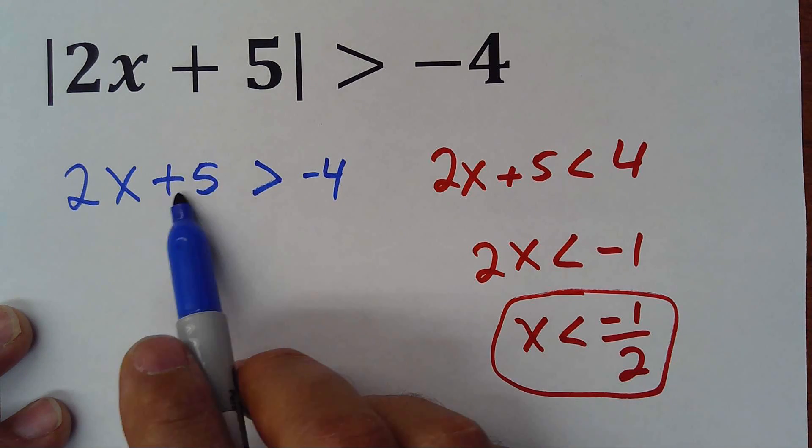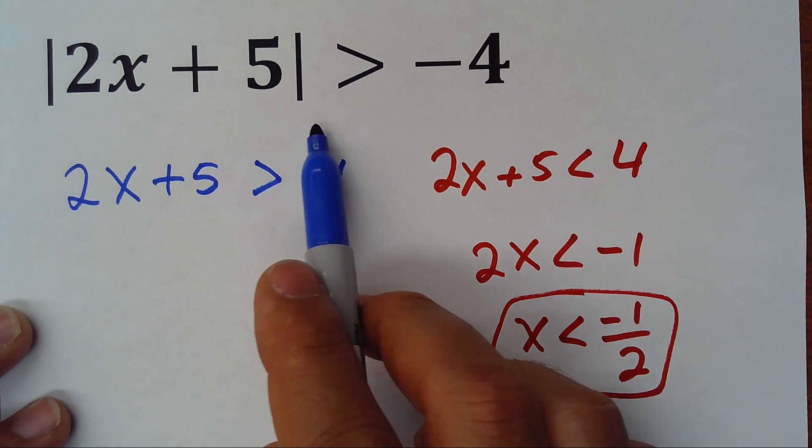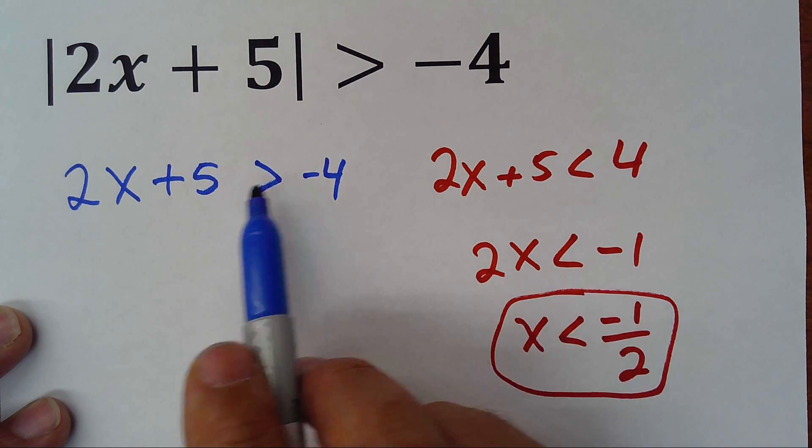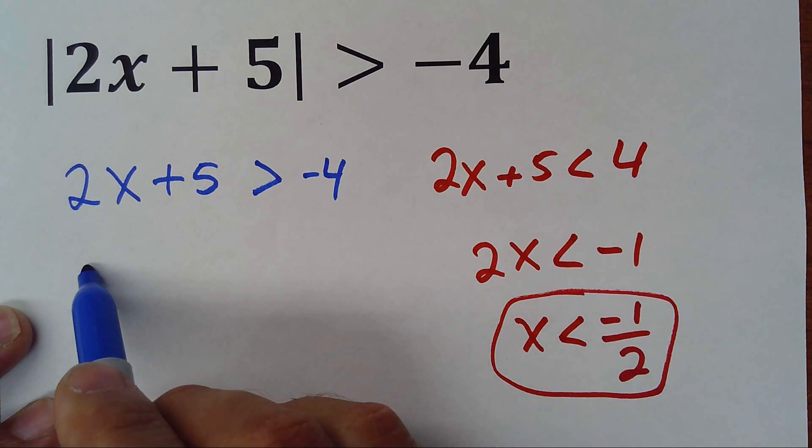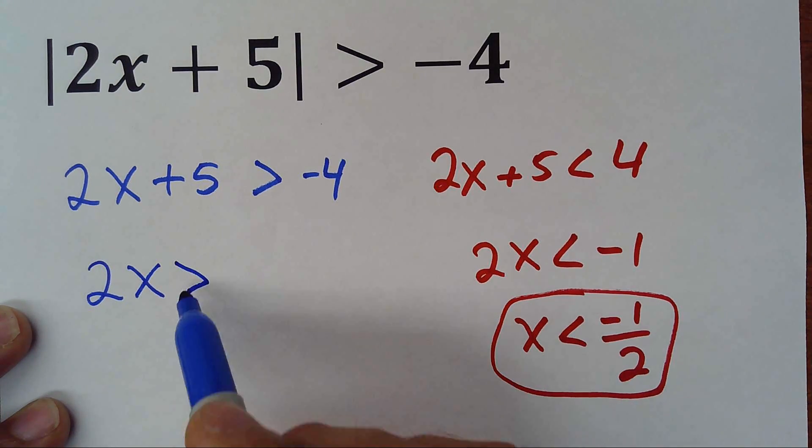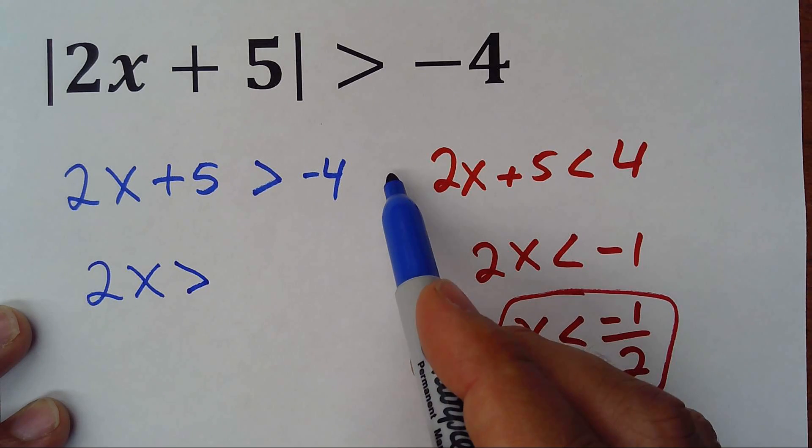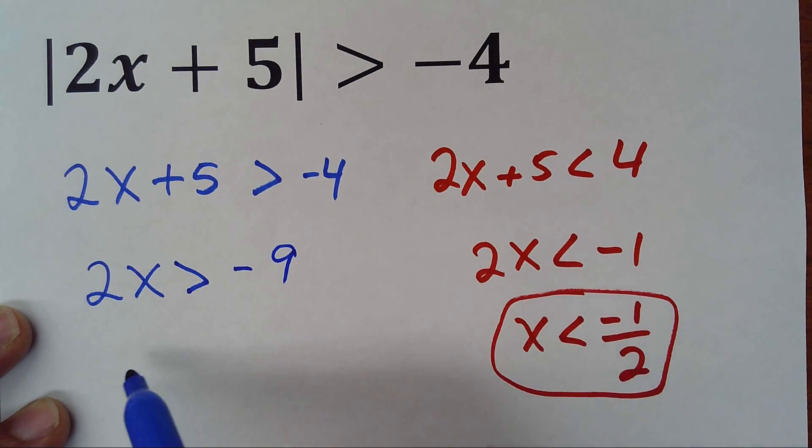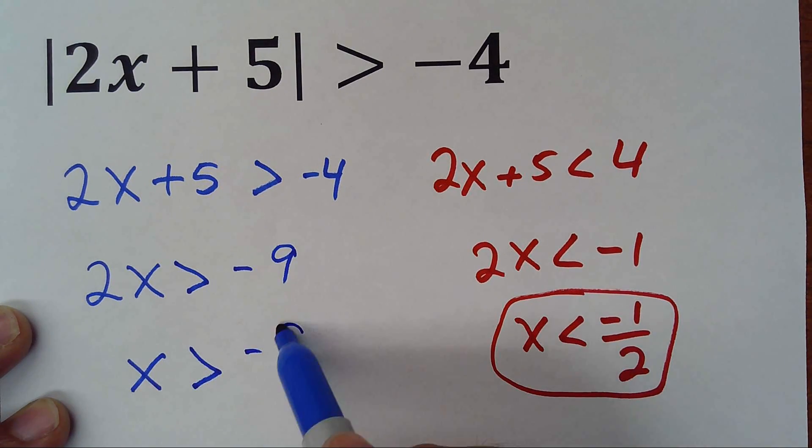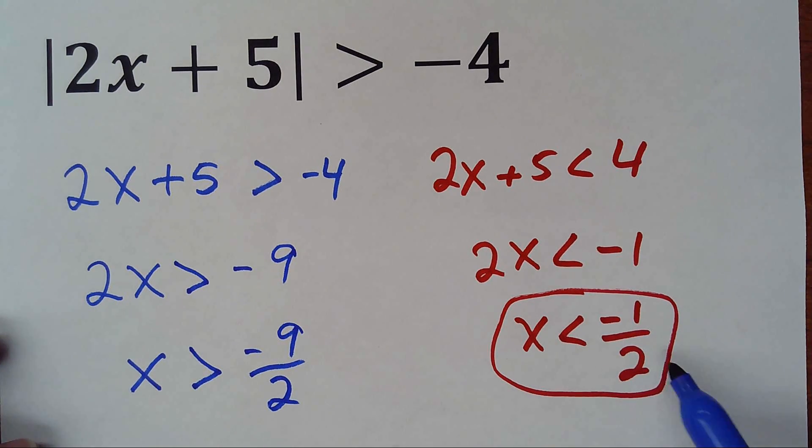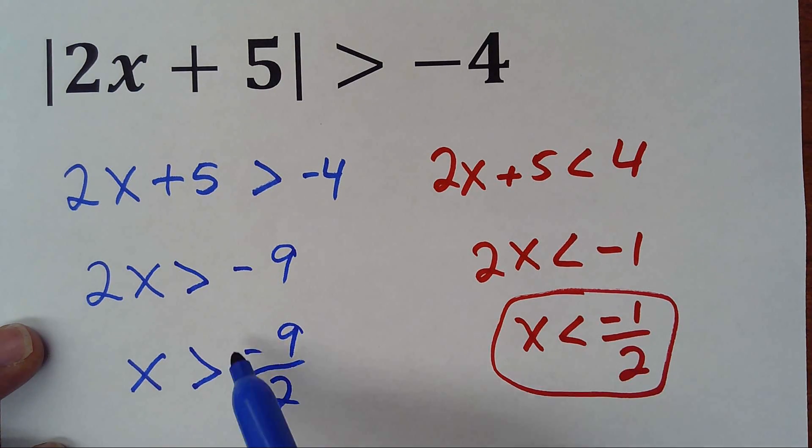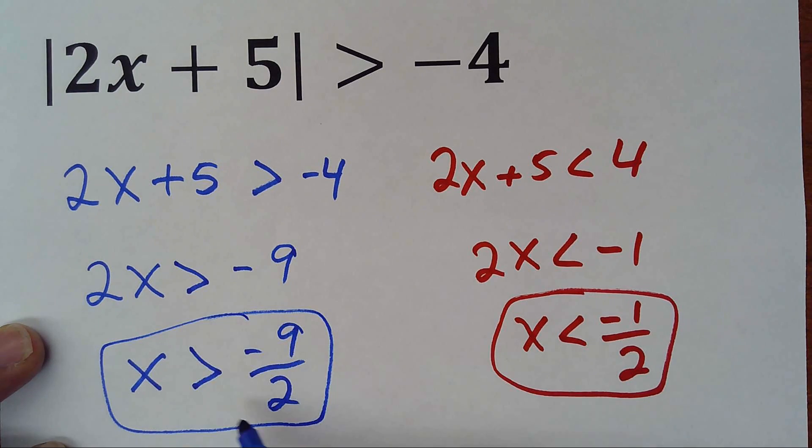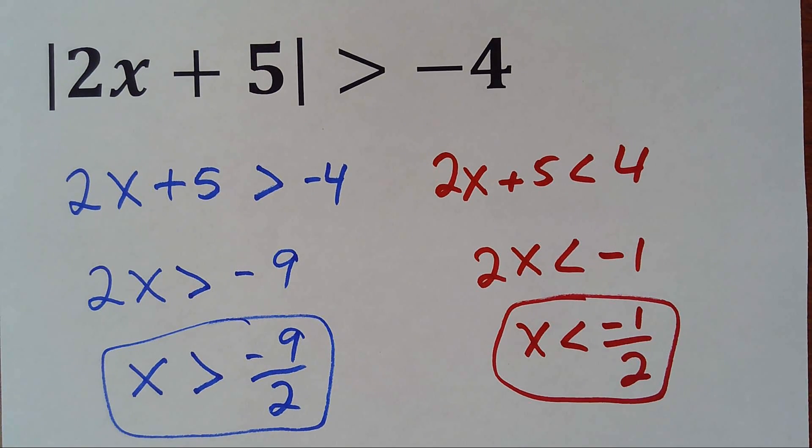And in the other side we do the same. This positive 5 will be here minus 5, subtract 5 both sides. So 2x is greater than negative 4 minus 5, which will be negative 9. X is greater than negative 9 divided by 2. So this one is negative 0.5 and this one is negative 4.5. So those two are solutions for this inequality.